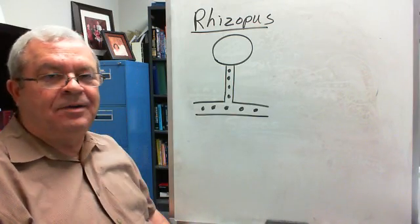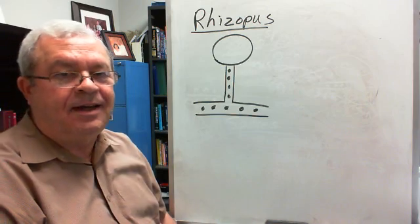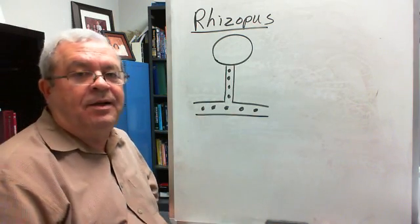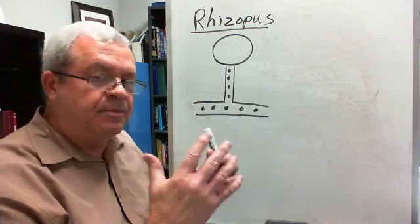Well, hello there. We're back to old rhizopus and how rhizopus reproduces. It involves this structure right here, a spore producing structure. It's called a sporangium. You don't have to know that, but it produces spores.